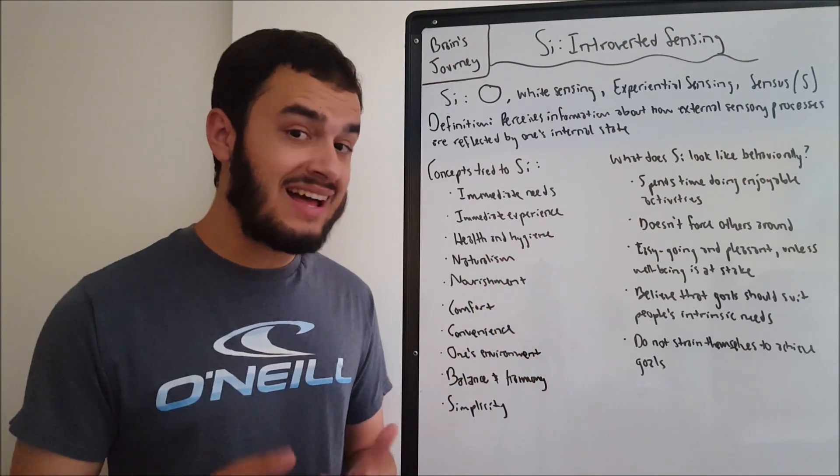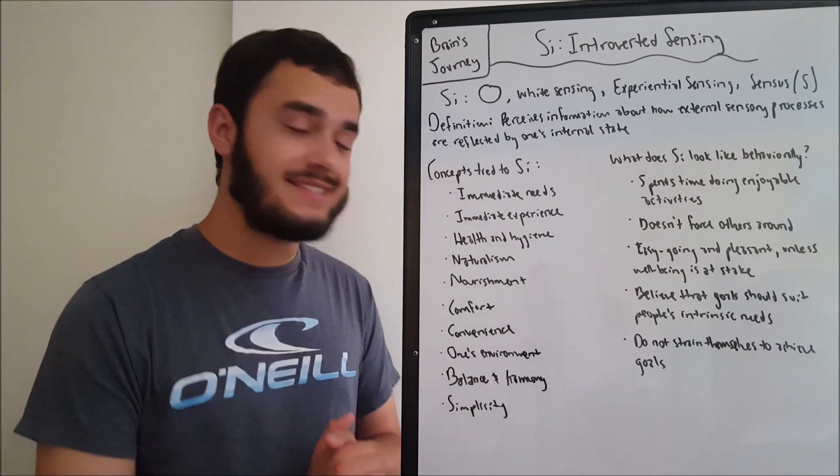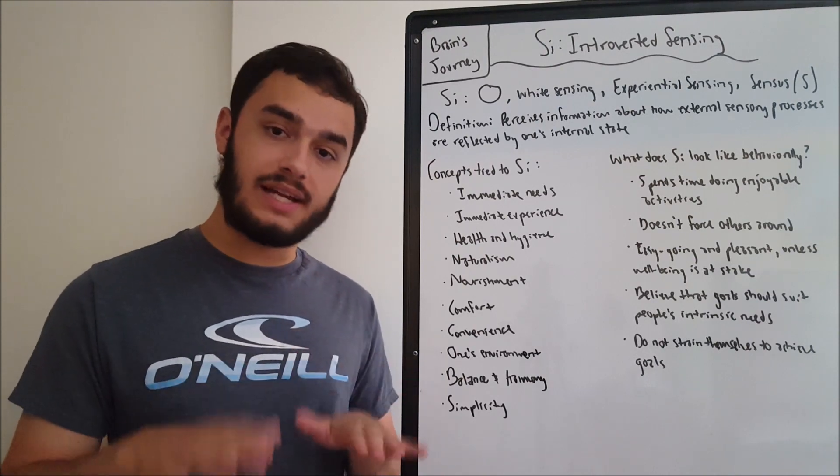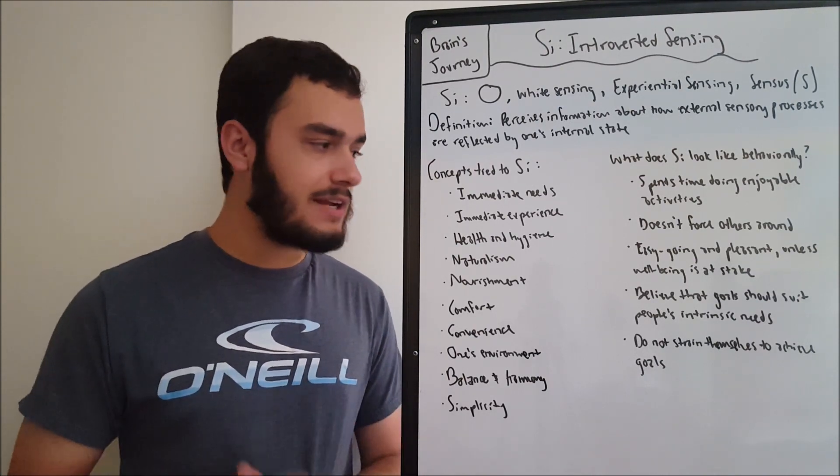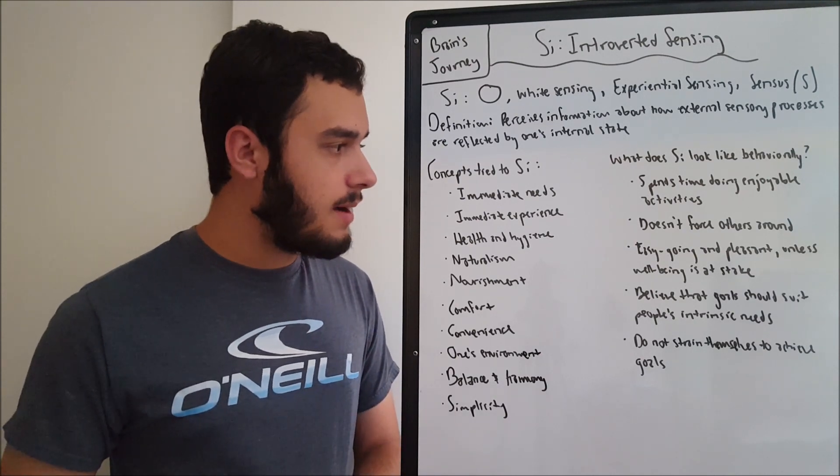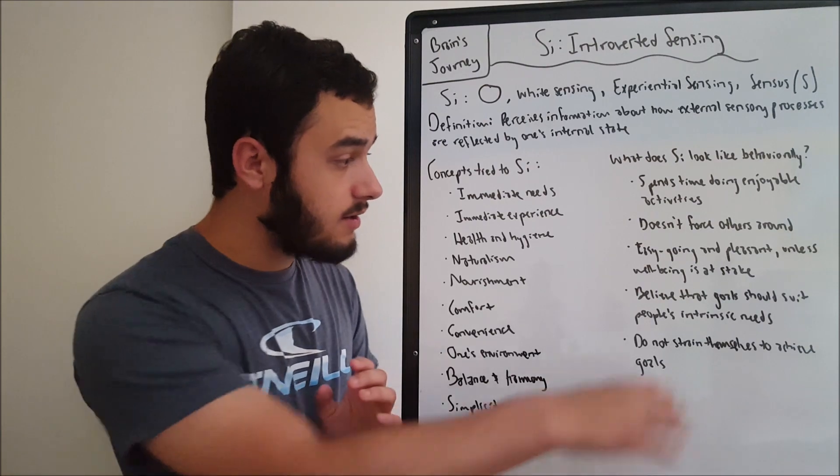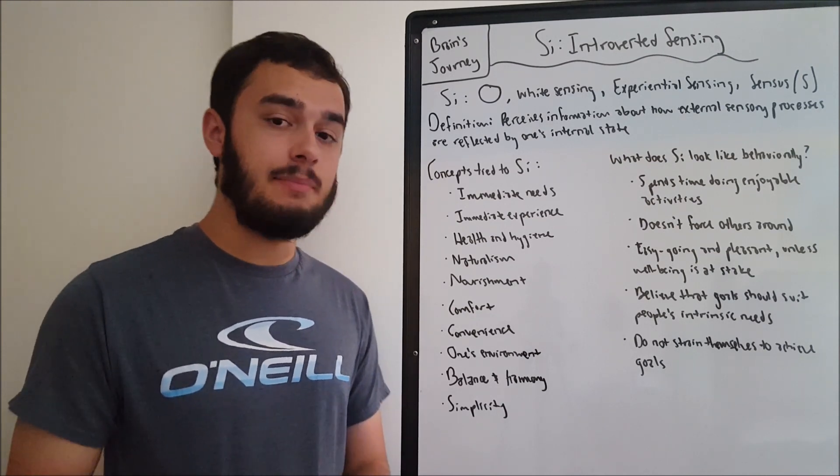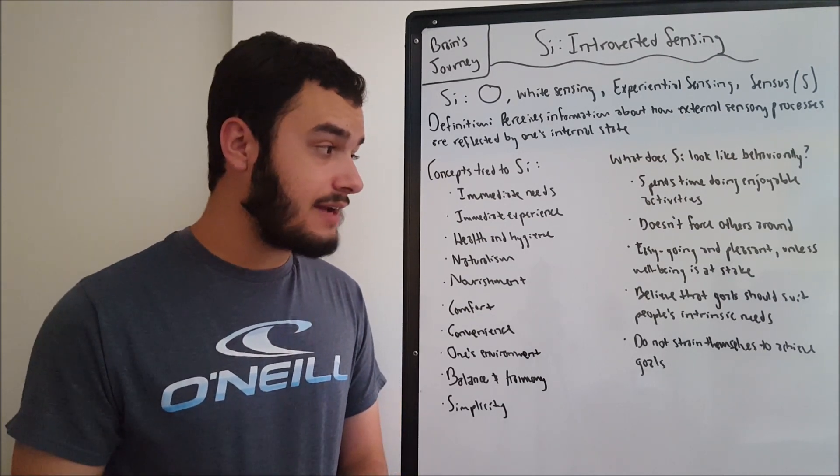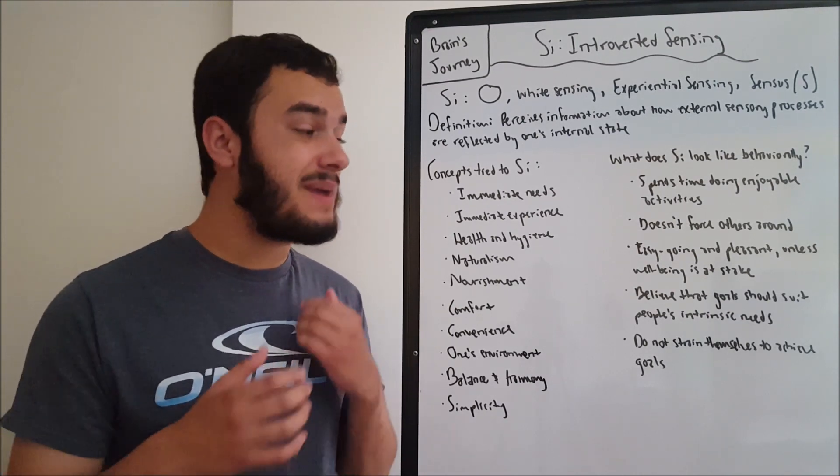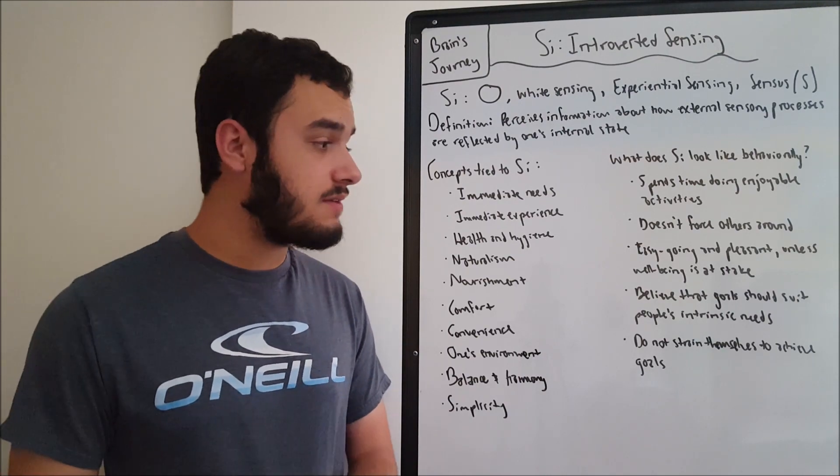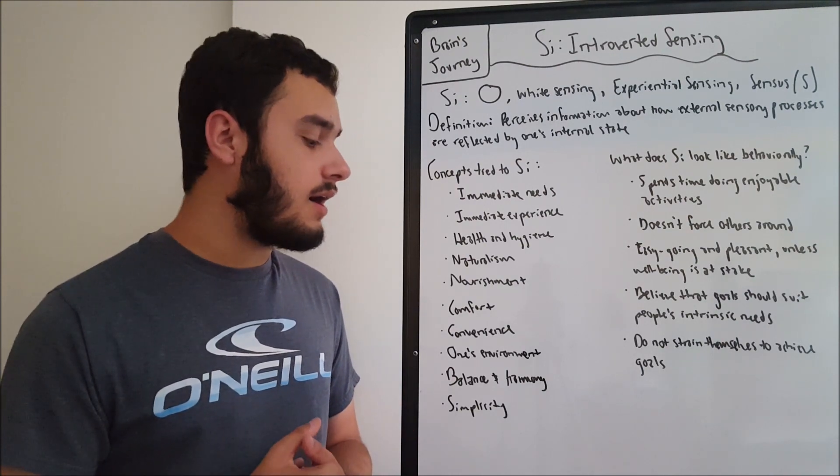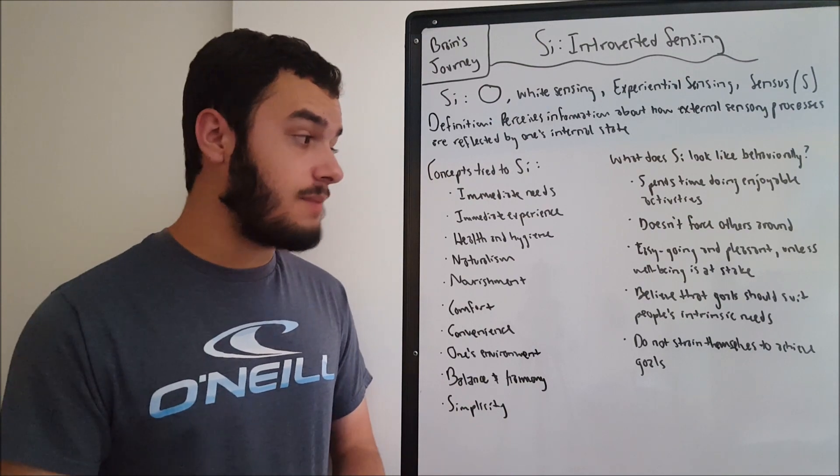Along with those two things, seems implied that SI would look easygoing and pleasant, because they're doing enjoyable activities, they don't force others around. They're generally pretty calm, collected people. Although there are certain situations where, if well-being is at stake, SI ceases to function, then perhaps a type may switch to using SE to achieve that kind of goal. Because if the environment is not going well, somebody's disrupting the environment, something is disrupting the environment, they may lose this kind of easygoing and pleasant behavioral trait in order to focus on coming back to that balance and harmony, sometimes by force.